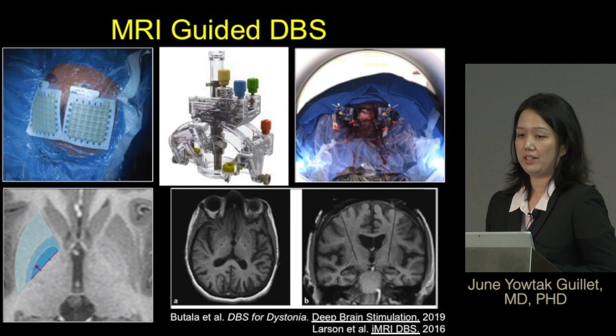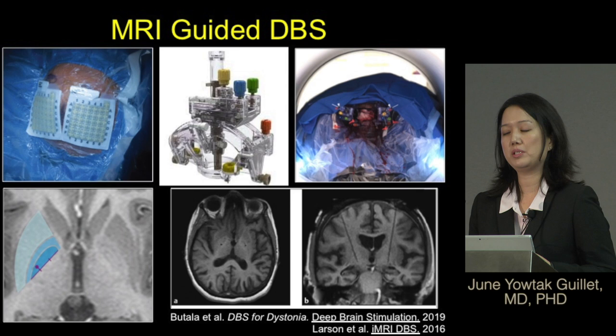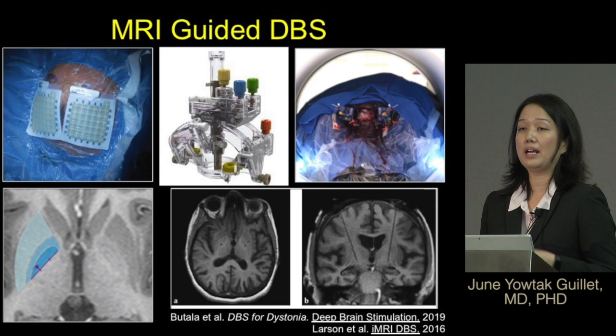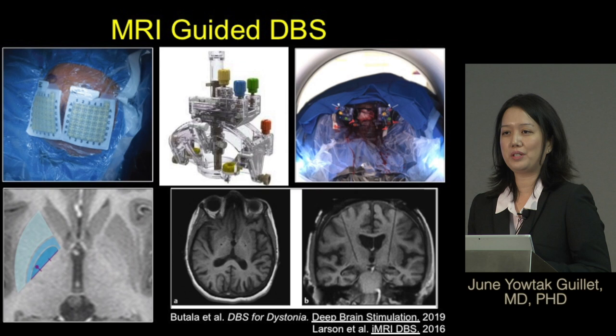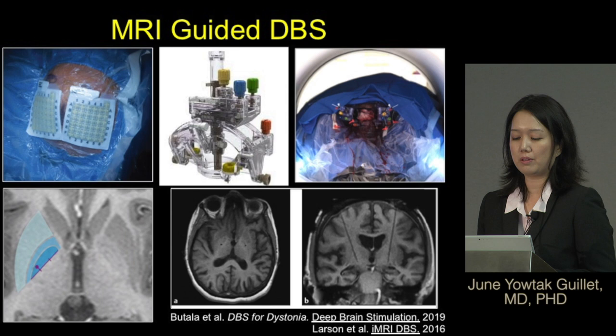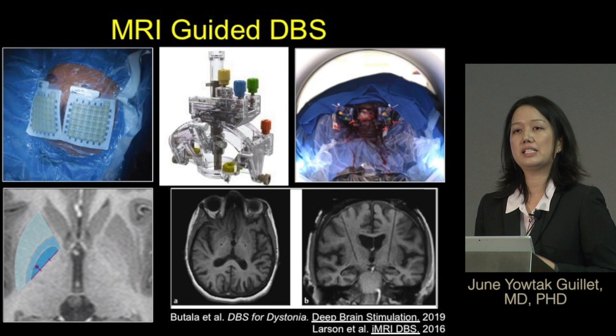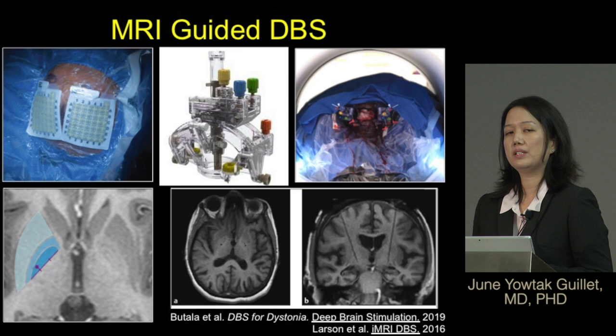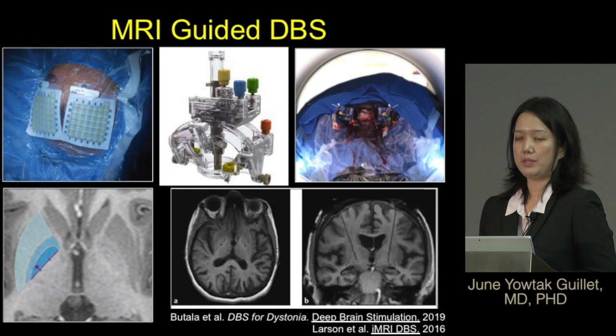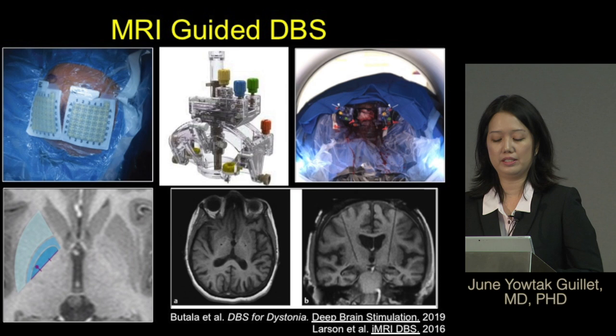With intraoperative MRI, you have real-time guidance to confirm you're in the correct trajectory and target. The downside is that patients are asleep, so you cannot test whether the stimulation at that target will actually be effective or cause side effects. With the awake approach and micro electrode recording, you can tell right away. In dystonia patients this is especially relevant because improvement may not be immediate — unlike tremor or Parkinson's patients, dystonia can take weeks to months before definite symptom improvement is seen.